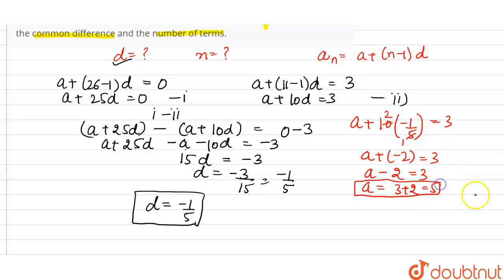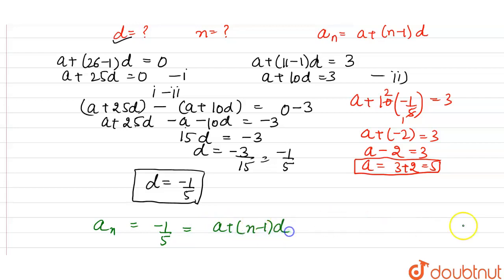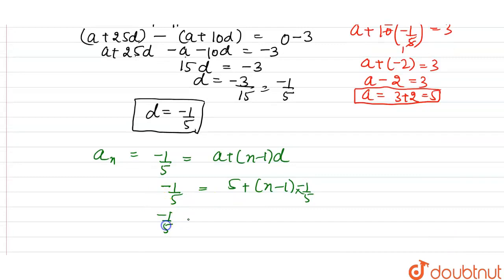We have a = 5 and common difference d = -1/5. Now, it is also given that the last term of the AP is -1/5. So aₙ = -1/5. Using the formula: -1/5 = a + (n-1)d, substituting a = 5 and d = -1/5: -1/5 = 5 + (n-1)×(-1/5), which gives -1/5 = 5 - n/5 + 1/5.